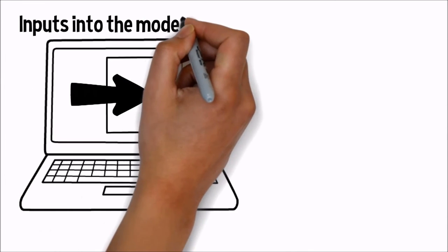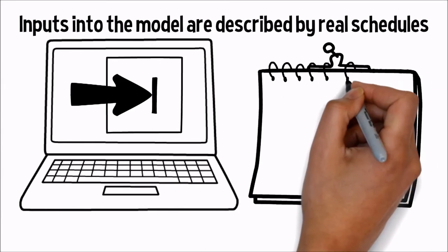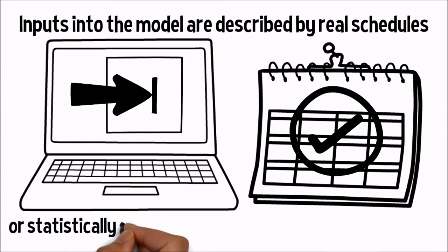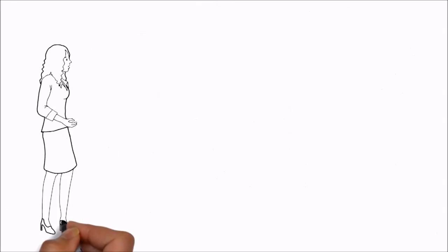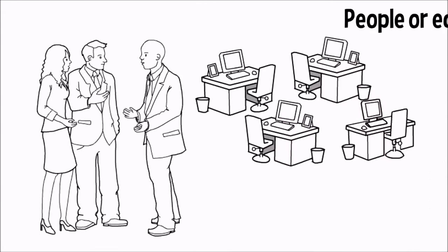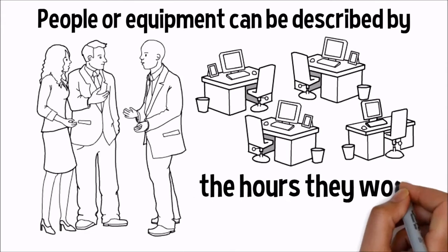Inputs into the model are described by real schedules, or statistically representing what has happened in the past. People or equipment can be described by the hours they work, skill levels, and cost.